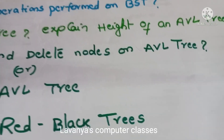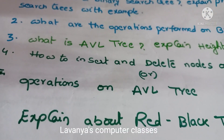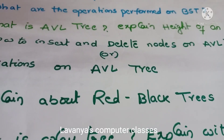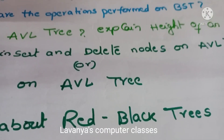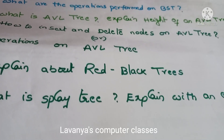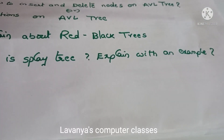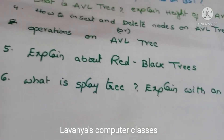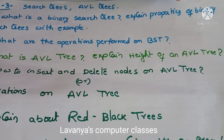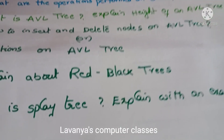Next important topic is AVL tree. What is AVL tree? Explain height of an AVL tree and how to calculate it. Then operations performed on AVL tree — insertion and deletion. If you concentrate on BST and AVL tree, that is enough. Sometimes they also ask about red-black trees: explain about red-black trees, what are the properties of red-black trees, and how to construct a red-black tree. Very rarely they ask what is a splay tree — explain with an example.